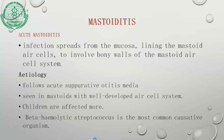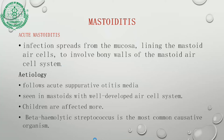Acute mastoiditis: infection spreads from the mucosal lining to the mastoid air cells, then involves the bony walls of the mastoid air cell system. Mastoid cells include the mastoid antrum, cells along the zygomatic bone, along the labyrinth, along the semicircular canals, along the sigmoid sinus, and perifacial and perisigmoid cells. Etiology follows acute suppurative otitis media, seen in mastoids with well-developed air cell systems, mostly in children. The most common causative organism is beta-hemolytic Streptococcus.